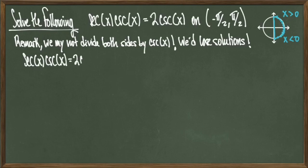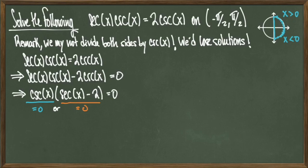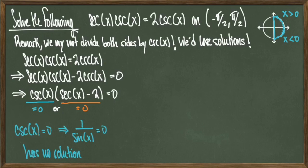What we'll do instead is subtract 2 cosecant x from both sides so that we have secant x times cosecant x minus 2 cosecant x equals 0. Then, since there is a cosecant x in each term, we can factor cosecant x out to get the revised equation: cosecant x times (secant x minus 2) equals 0. We're back to having a product of two things equal to 0. Setting cosecant x equal to 0 means 1 over sine of x equals 0, which has no solutions since sine of x is in the denominator and cannot force the fraction to equal 0.